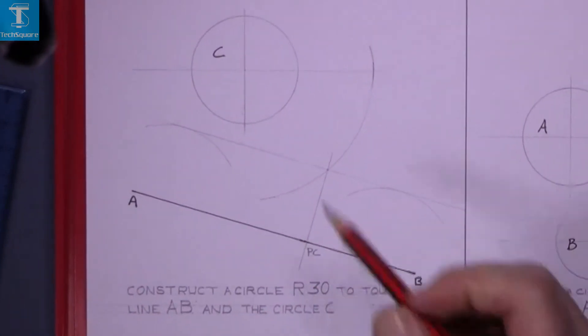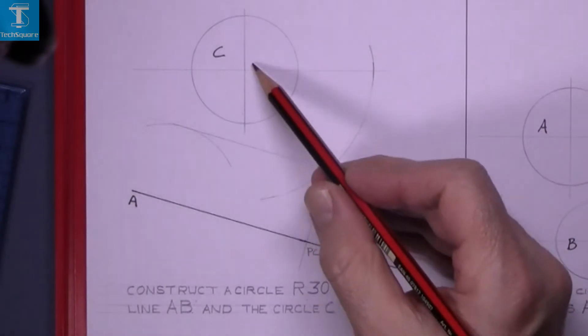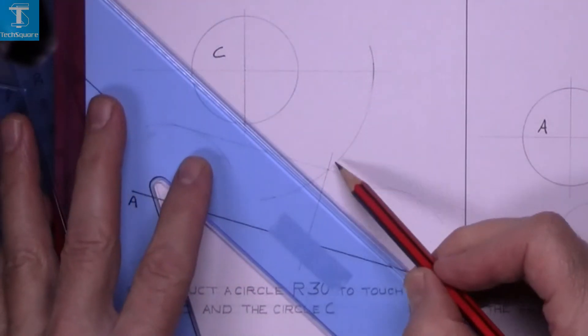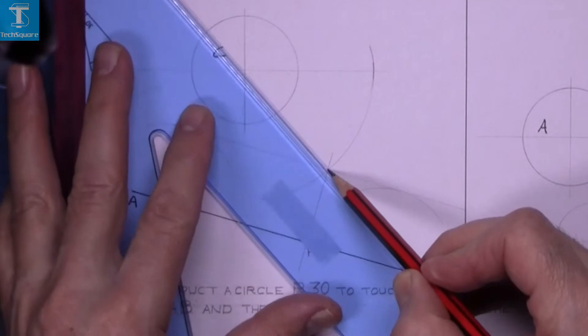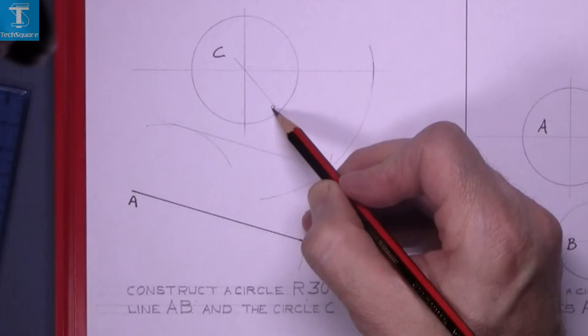Now the point of contact between the circle and the circle we are about to draw, you join the two centers, so join the new center to the center of circle C. Now there is your point of contact.